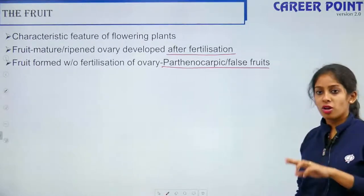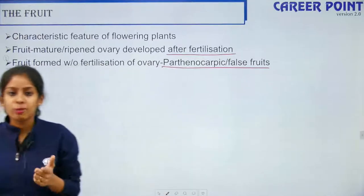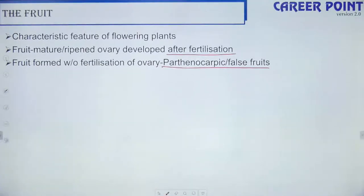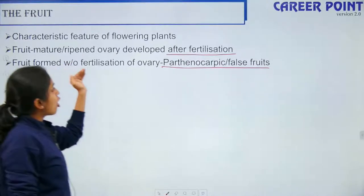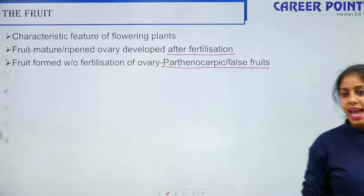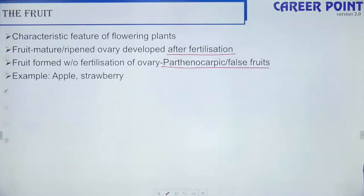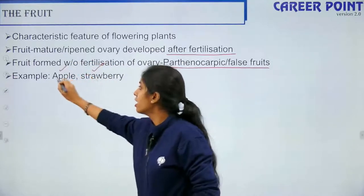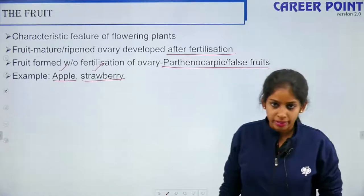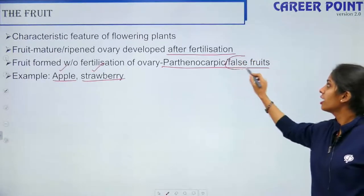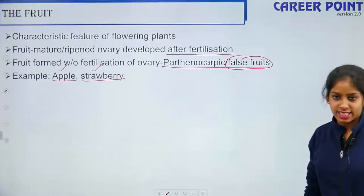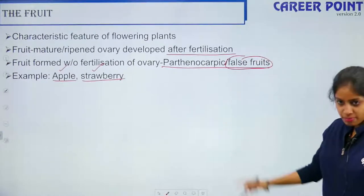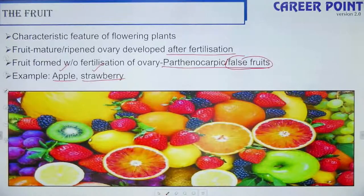Parthenocarpic fruits are false fruits because there is no direct fusion of male and female gametes. There are three types of fruits: simple, aggregate, and composite. Fruit consists of a wall known as the pericarp plus seeds.